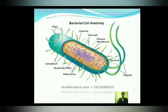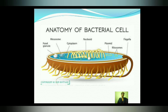This is the bacterial cell anatomy. Some of the parts are: capsule, cell wall, plasma membrane, flagella, plasmid, ribosomes, nucleoid, cytoplasm, and pili. These are all the parts present in the bacterial cell. We are going to discuss all these structures in detail in the following videos. This is the 3D structure of the bacterial cell, where we can clearly see flagella, pili, granules, mesosomes, and the nuclear coiled structure.